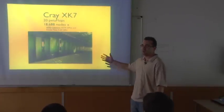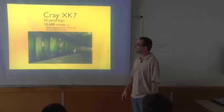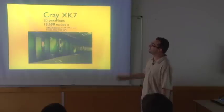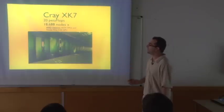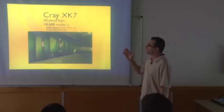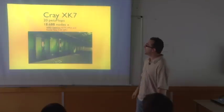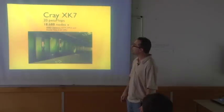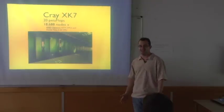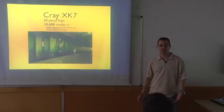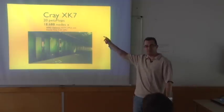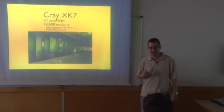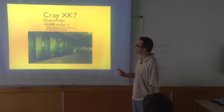This is the fastest supercomputer right now, just delivered in the US at Oak Ridge National Laboratory. It has 20 petaflops and 12,000 nodes. Each node has one AMD Opteron and one NVIDIA Tesla, and the NVIDIA Tesla has 512 cores. Each core has more than one floating-point unit, so there are a lot of floating-point units in total.